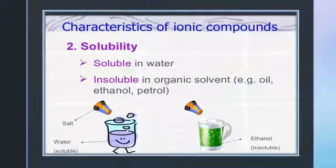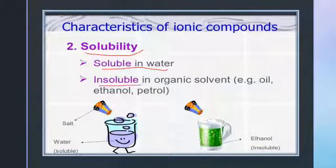The next chemical property is solubility. Ionic compounds are soluble in water but insoluble in organic solvents like ether, acetone, alcohol, benzene, kerosene oil, etc.